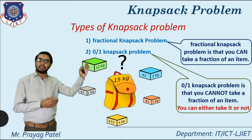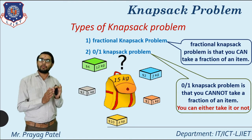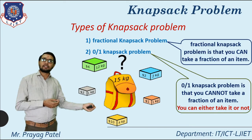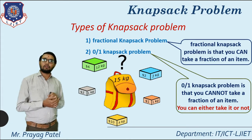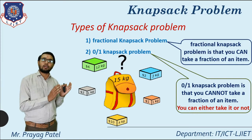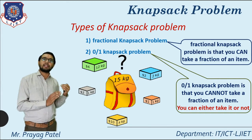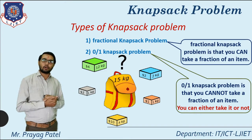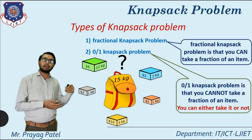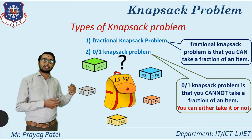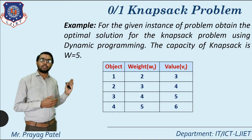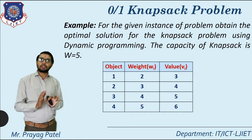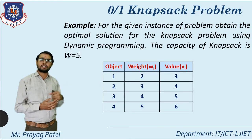In 0/1 Knapsack, you either take it or not — hence the name 0/1. If the available weight is 5 kg and the object weighs 5 kg or less, select it (value = 1); otherwise do not select it (value = 0). In the dynamic programming chapter, we discuss the 0/1 Knapsack problem specifically.